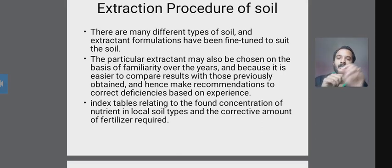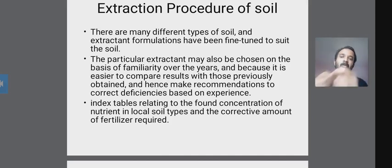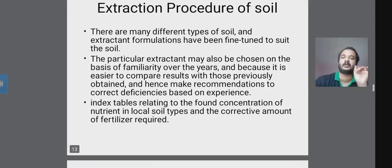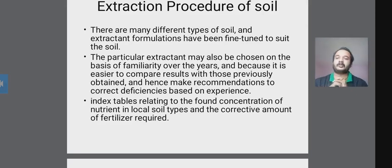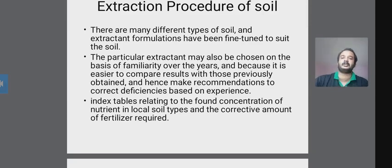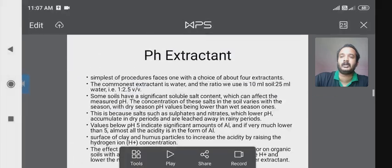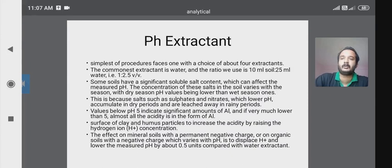Third, the index table relates to the found concentration of nutrient in local soil types. This index table shows the corrective amount of fertilizer required for the soil. This is all about the extraction procedure of the soil. Next time we will discuss the pH extractor and the phosphate extractor.